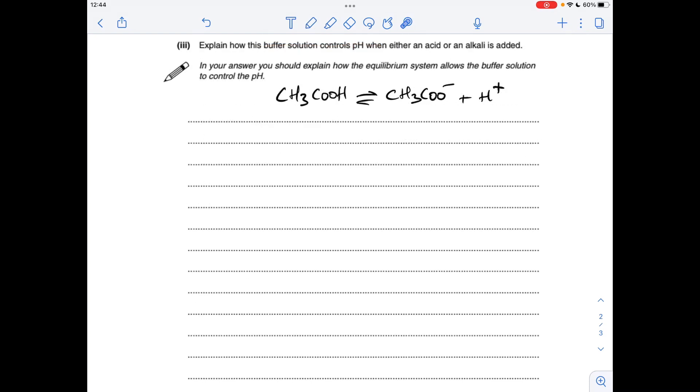And the final part, explaining how the buffer works when either an acid or an alkali is added. So I've written up the equilibrium system for the buffer. And then we're just going to use this to explain how the buffer responds. We'll start with the addition of acid. So obviously adding acid introduces more H plus ions to the equilibrium system. So this ion here is going to react with those extra H plus ions. And the equilibrium is going to shift over to the left.